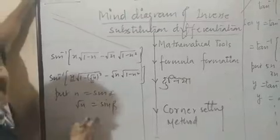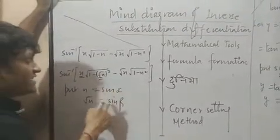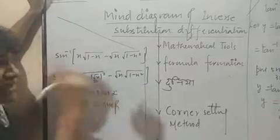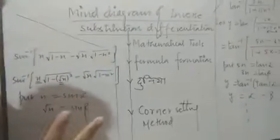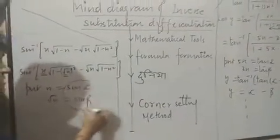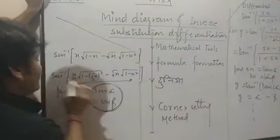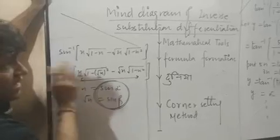Either sin, sin or cos, cos. Don't take like this: one sin, one cos. Then formula will not frame. If in one question two substitutions are required, both substitutions should be of same nature. Then only you can get the formula which will break this sin inverse. Clear?